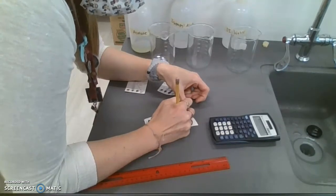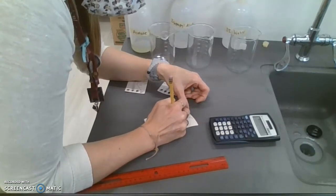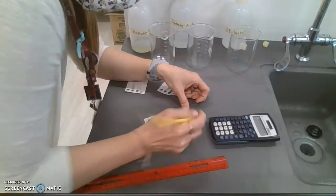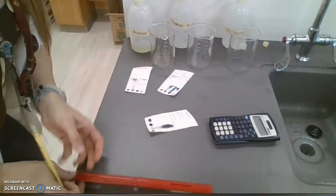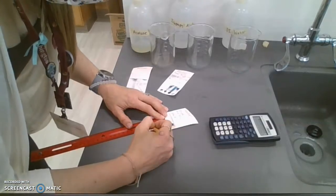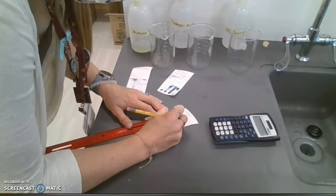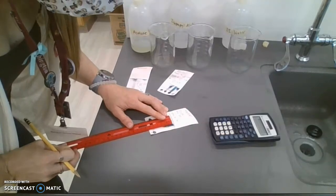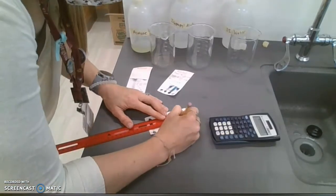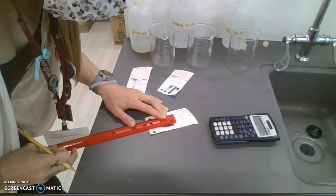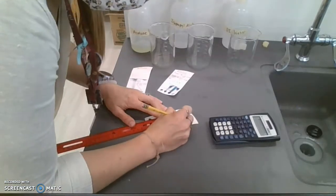So I have my blue and my yellow. The retention factor is how far that pigment moves over the solvent front. The yellow is 3.1 centimeters, the blue is 4.4 centimeters, and the solvent front moves 5.5 centimeters.